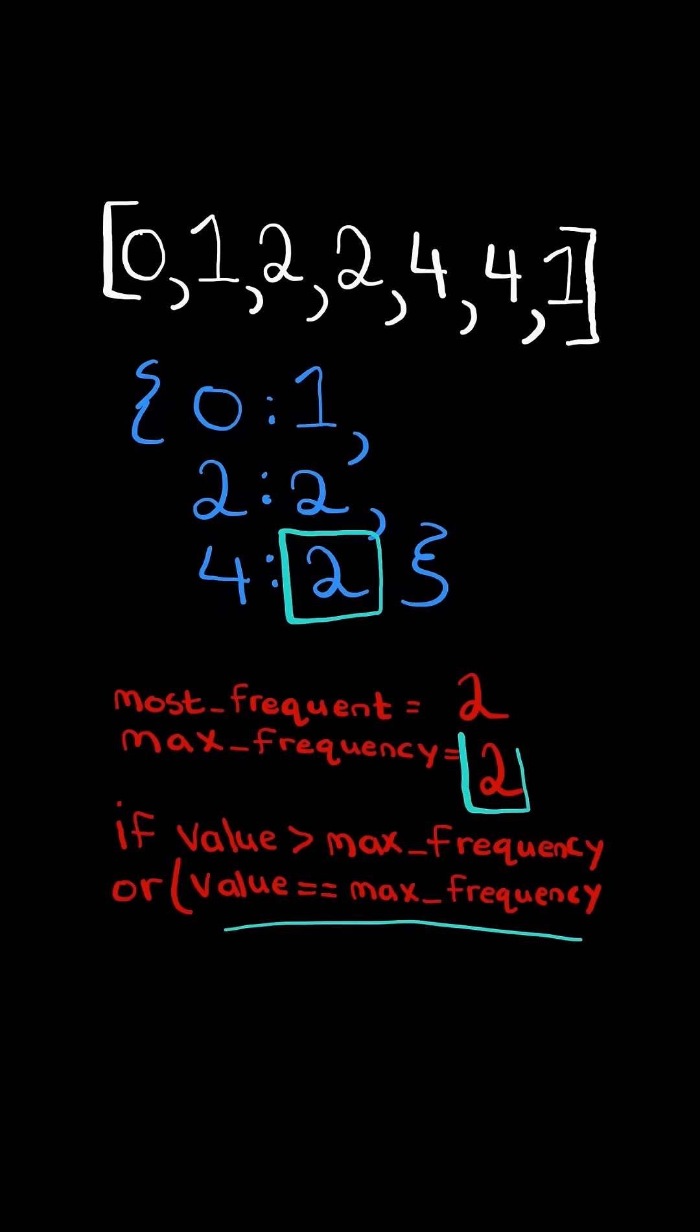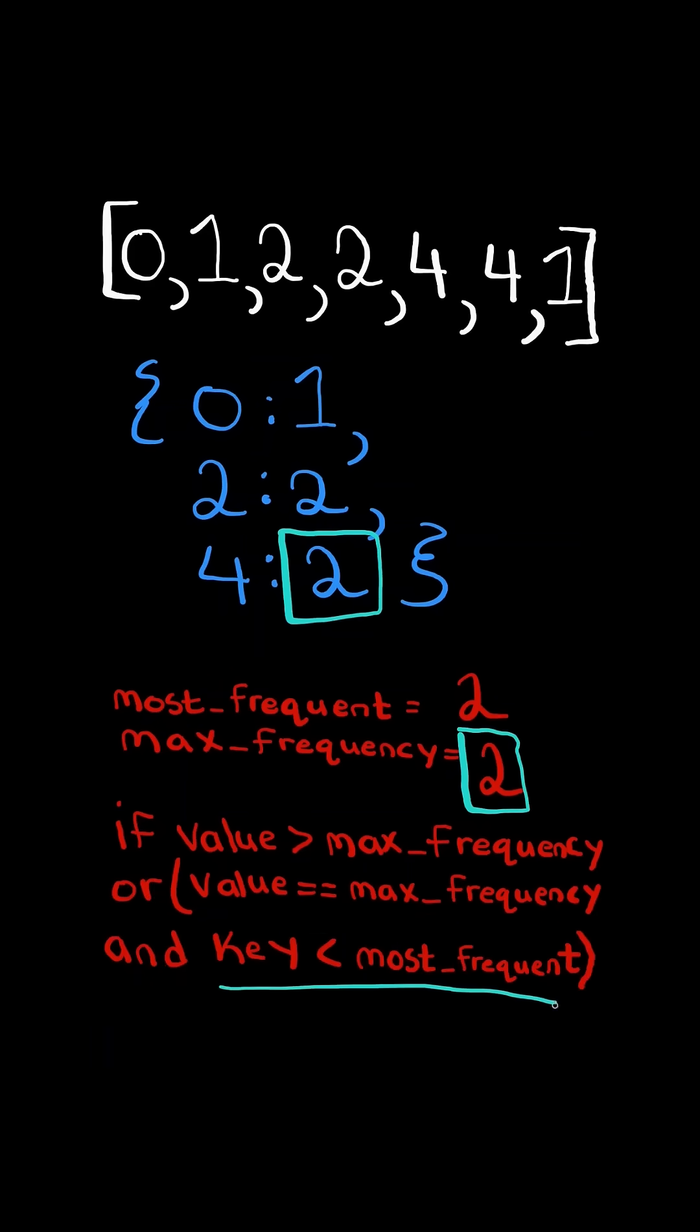If the value equals max frequency, but the key is not less than most frequent, so we don't update. At the end, we return most frequent.